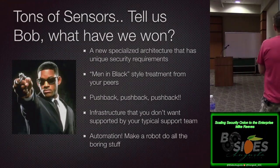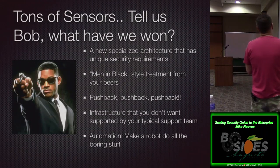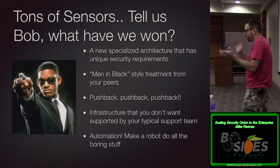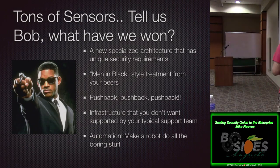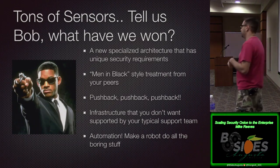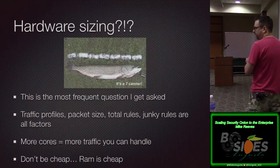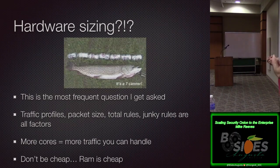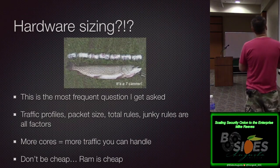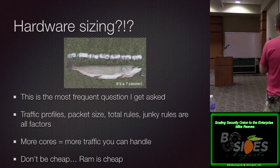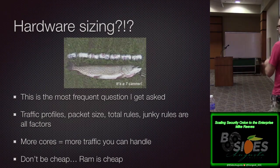Now we've got all these sensors — we need a specialized architecture. People say 'you're putting a black box on my network, it's scary.' You'll get tons of pushback. You need automation. You don't want to be adding user accounts all day — you want to be looking for bad guys. The biggest question I get asked all the time is: I've got this much bandwidth, which size box do I need? It's a hard question to answer because traffic profiles play into it.